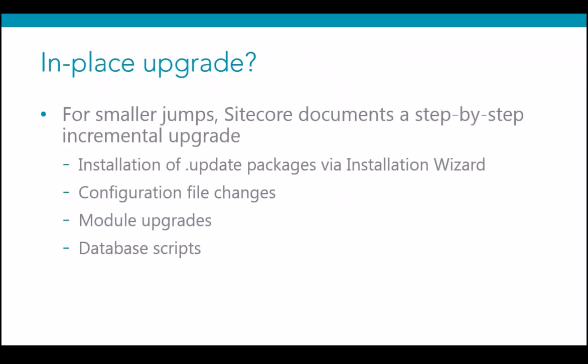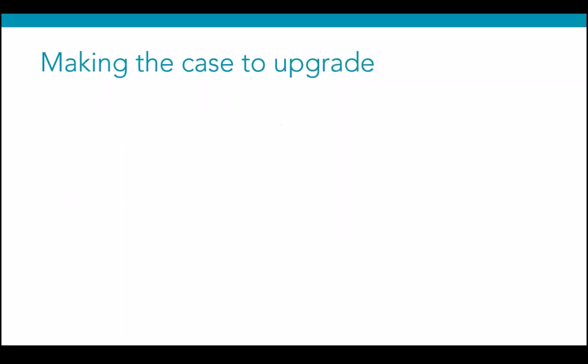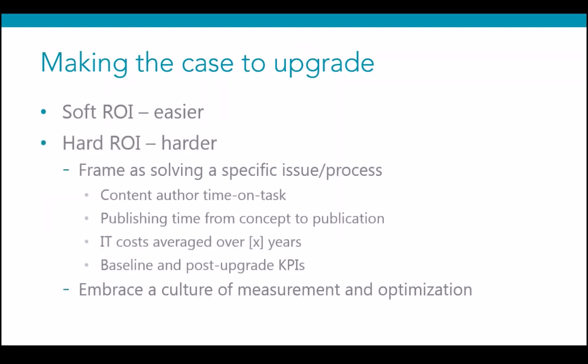Making the case to upgrade: there's soft ROI — numerous arguments and justifications throughout this presentation. For harder ROI, we advise framing the upgrade as solving specific, measurable issues: content author time, publishing time from writing to publication, IT costs averaged over years, and baseline versus post-upgrade KPIs. We're actually working on an asset to give examples and calculations to support this.